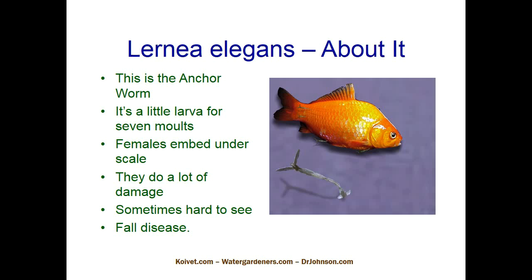The other thing about anchor worm is that it will chew on the fish and cause flashing, scratching, and that sort of thing for a while before it shows up as the worm. From memory, there are about seven larval forms as it's molting through, and a free-swimming version before it even attaches and becomes the worm. The worm is actually a female organism, so you've got your males and babies all swimming around, biting the fish, causing them to flash and scrape. Then after three to seven days of that, all of a sudden these worms show up.